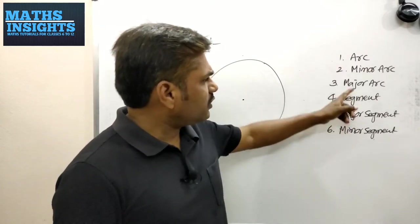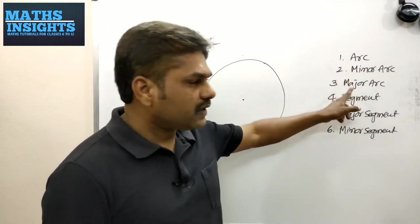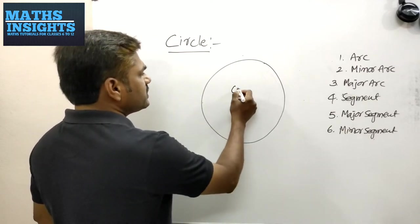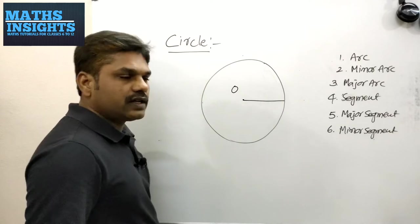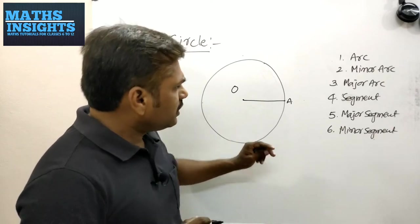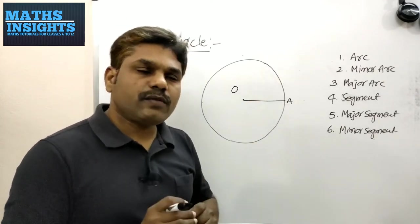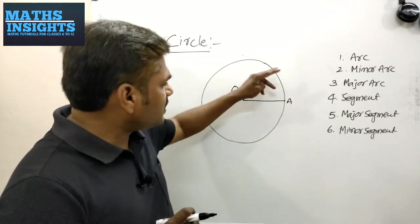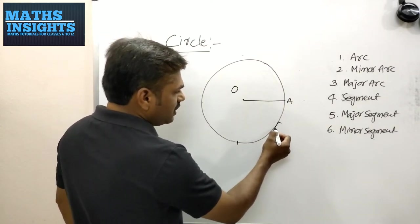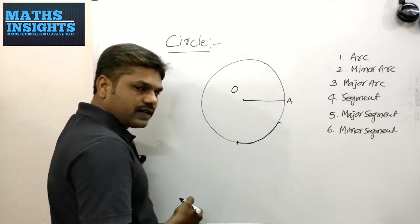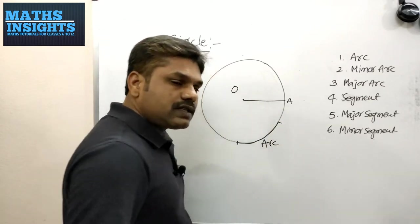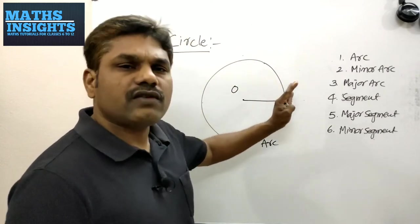These are very important terms: arc, minor arc, major arc, segment, major segment, and minor segment. Taking a circle whose centre is O and a point A on the circle, OA is the radius. An arc is nothing but some part of the curved line of the circle — from one point to another along the boundary. That curved portion is called an arc. An arc is part of the circumference of the circle.